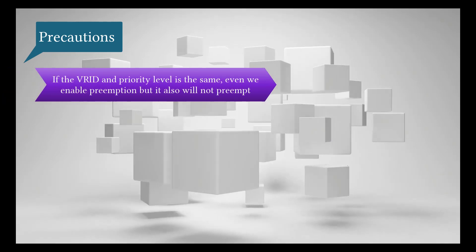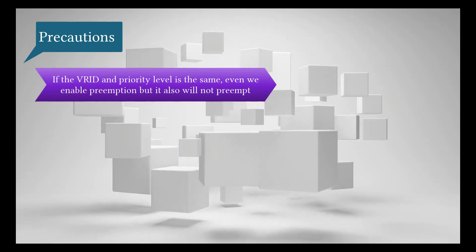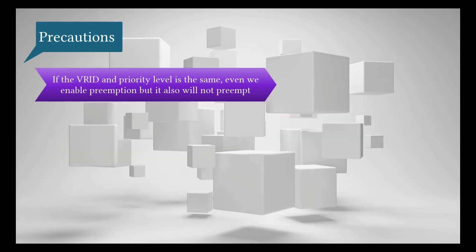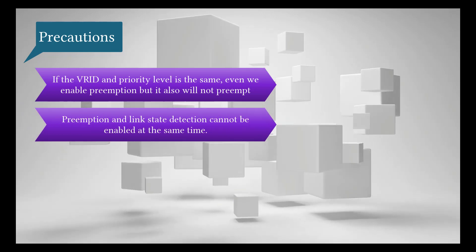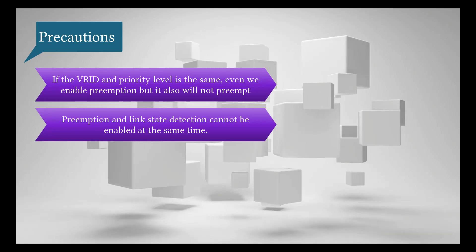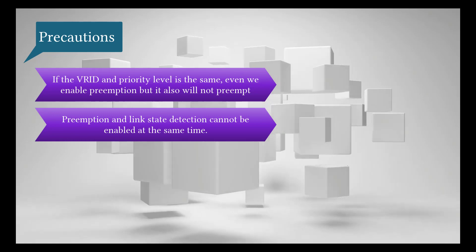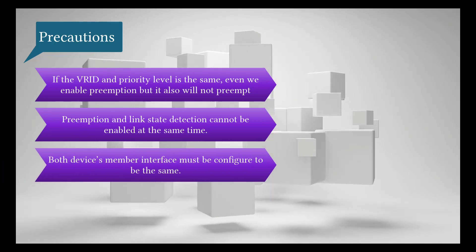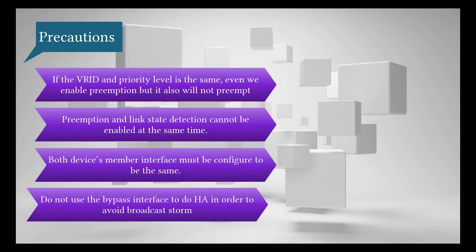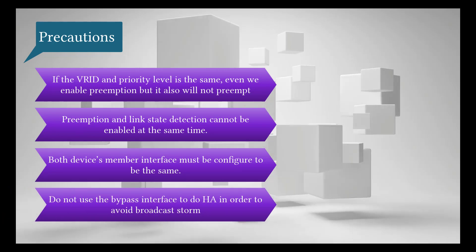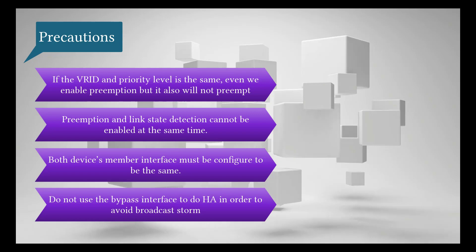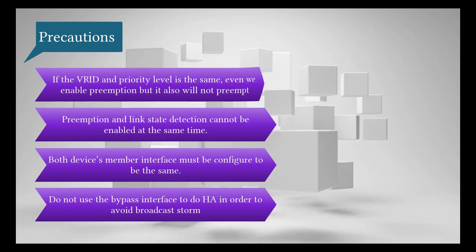Important notes: If the VR ID and priority level are the same, even if preemption is enabled it will not preempt. Preemption and link state detection cannot be enabled at the same time. Both devices' member interfaces must be configured to be the same. Do not use the bypass interface for HA, in order to avoid a broadcast storm.